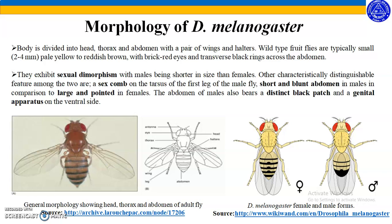Coming to the morphology of Drosophila melanogaster: the body is divided into head, thorax, and abdomen with a pair of wings and halteres. Wild-type fruit flies are typically small, 2–4 mm, pale yellow to reddish brown with brick-red eyes and transverse black rings across the abdomen. These organisms exhibit sexual dimorphism — males are shorter than females. Other distinguishing features include a sex comb on the tarsus of the first leg of the male fly, and a short blunt abdomen in males compared to a large pointed abdomen in females.